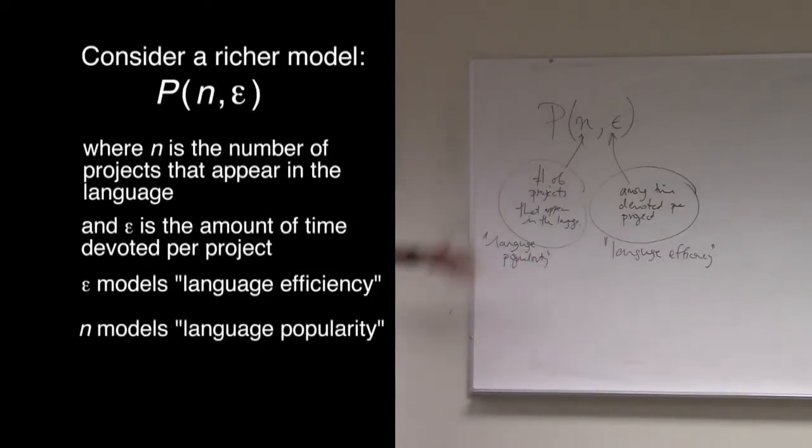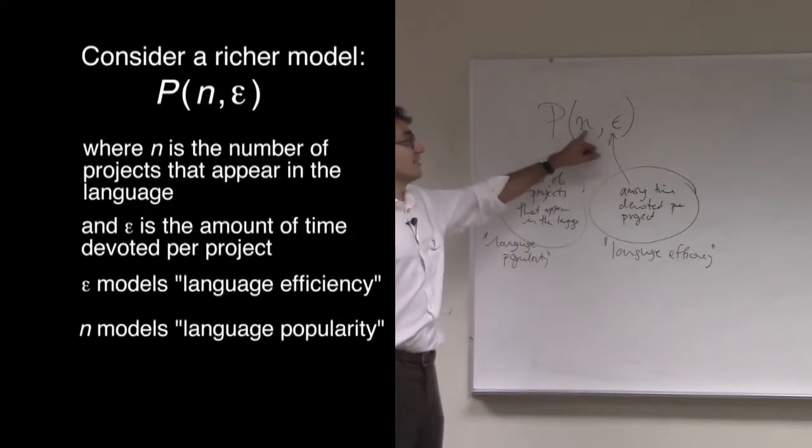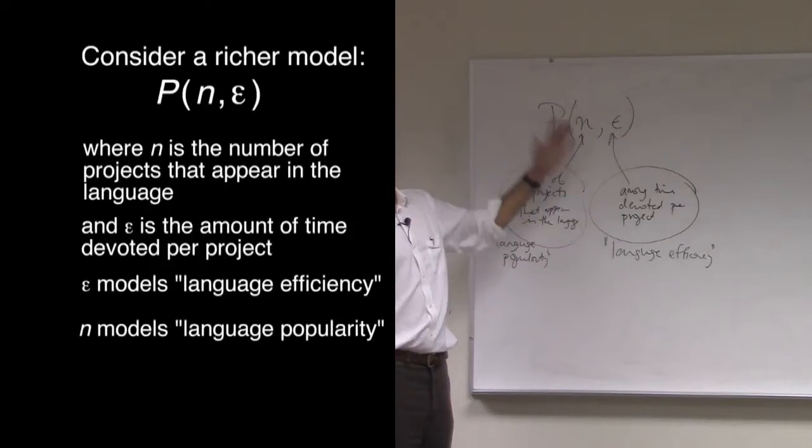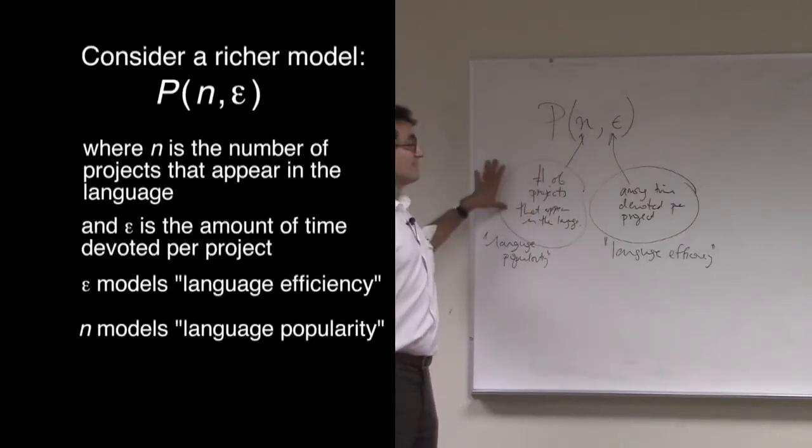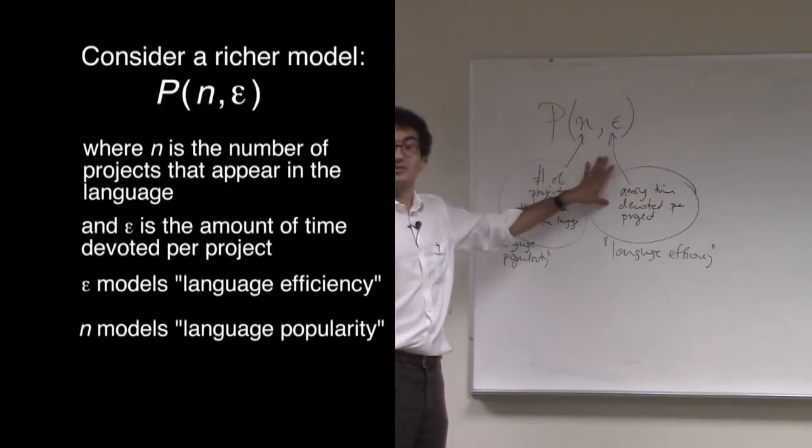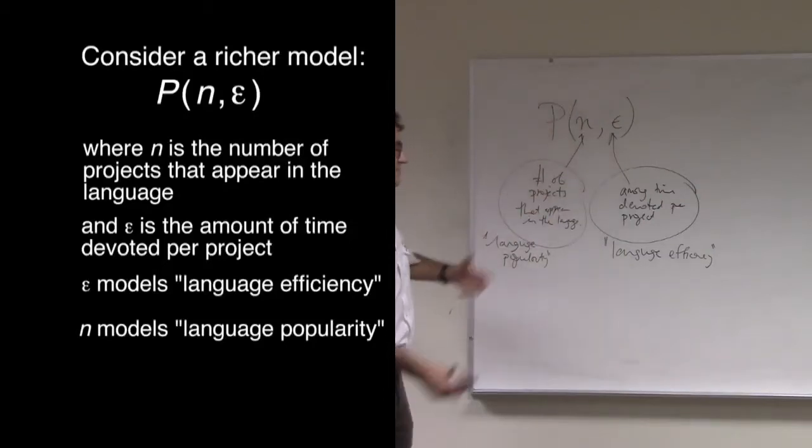Some languages, for example, are extremely popular and extremely efficient, so they have n as large and epsilon as small. Other languages perhaps are not quite as popular and are perhaps less efficient or require more programmer time. And of course, there might be extremely efficient languages that are profoundly unpopular and vice versa.